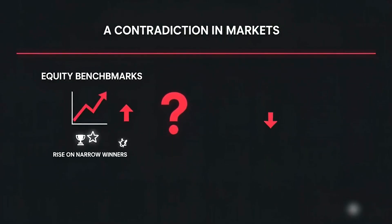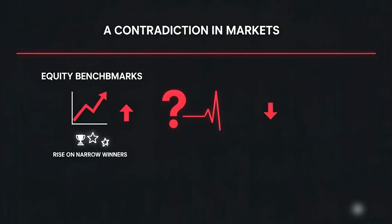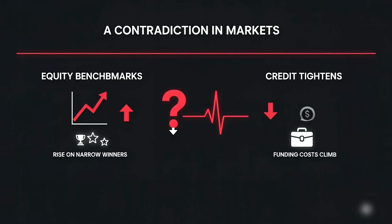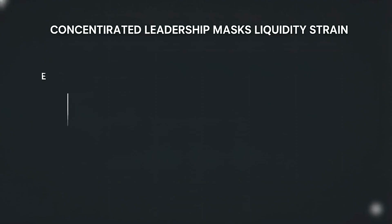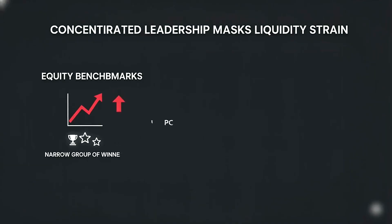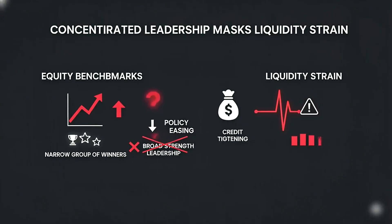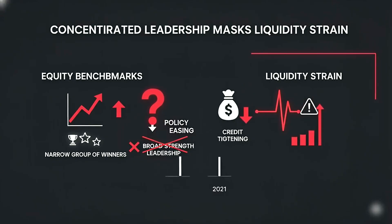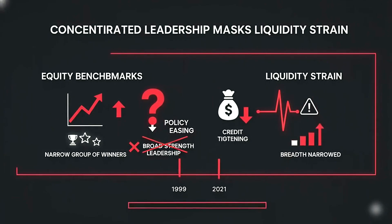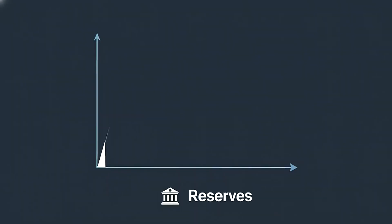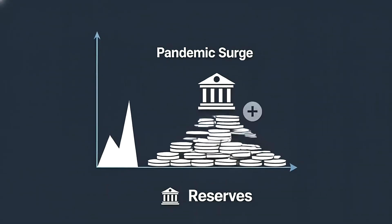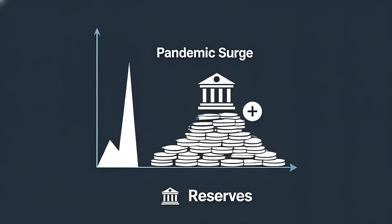Check this contradiction. Equity benchmarks can rise on a narrow group of winners while credit quietly tightens. That's not broad strength — that's concentrated leadership masking liquidity strain. The pattern emerged in 1999 and again in 2021. Breadth narrowed first. Funding stress arrived later. Look at what happened after the pandemic surge.